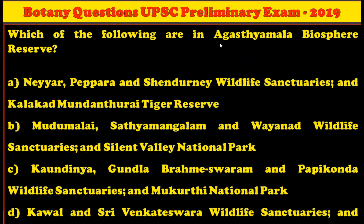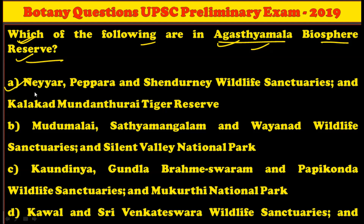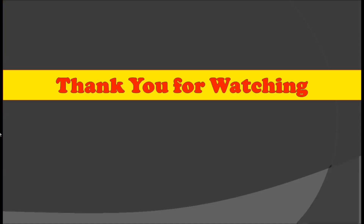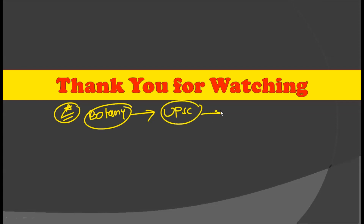The next question is about the Agasthamala Biosphere Reserve: which of the following places are included in the Agasthamala Biosphere Reserve? The first option — Neyar, Peppara, and Shendurney Wildlife Sanctuaries, and Kalakkad Mundanthurai Tiger Reserve — all these places are included in the Agasthamala Biosphere Reserve. So option number 1 is the right answer. These are all the questions relating with the Botany subject which form part of the UPSC Preliminary Examination of 2019.